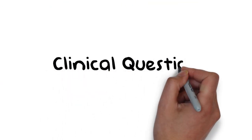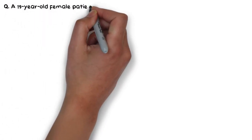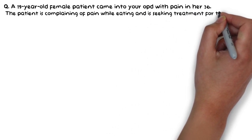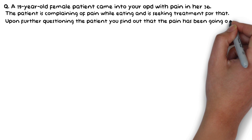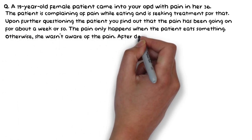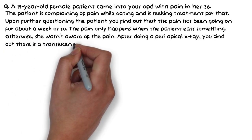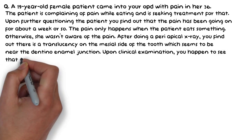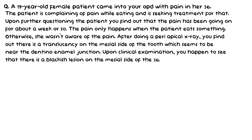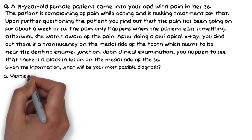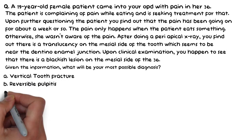Now let's look at a clinical question to spot the difference between the two. A 19-year-old female patient presents with pain in tooth 3-6, which in FDI notation is the mandibular left first molar. She complains of pain while eating for about a week. The pain only occurs when eating and is not spontaneous. A periapical X-ray shows a translucency on the mesial side near the dentino-enamel junction, and clinical examination reveals a blackish lesion on the mesial side of 3-6. The options are: A) vertical tooth fracture, B) reversible pulpitis, C) irreversible pulpitis, or D) gingivitis.